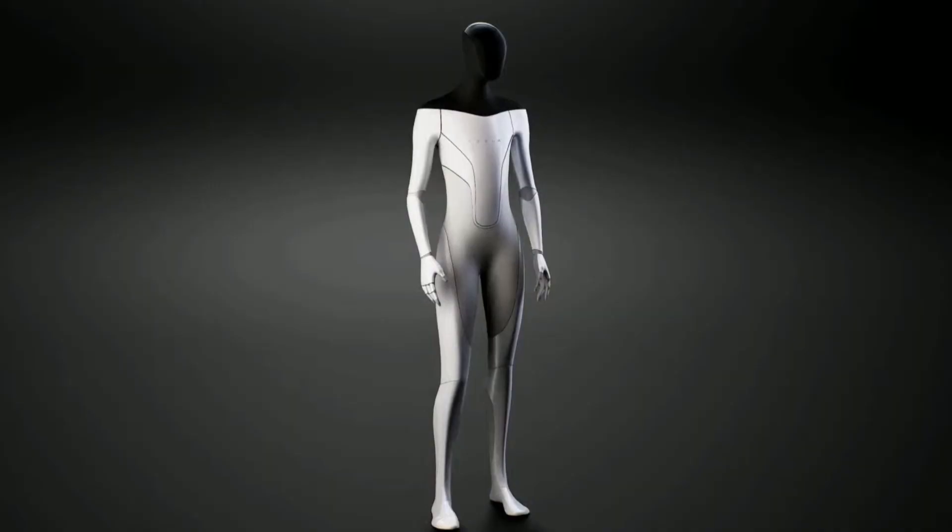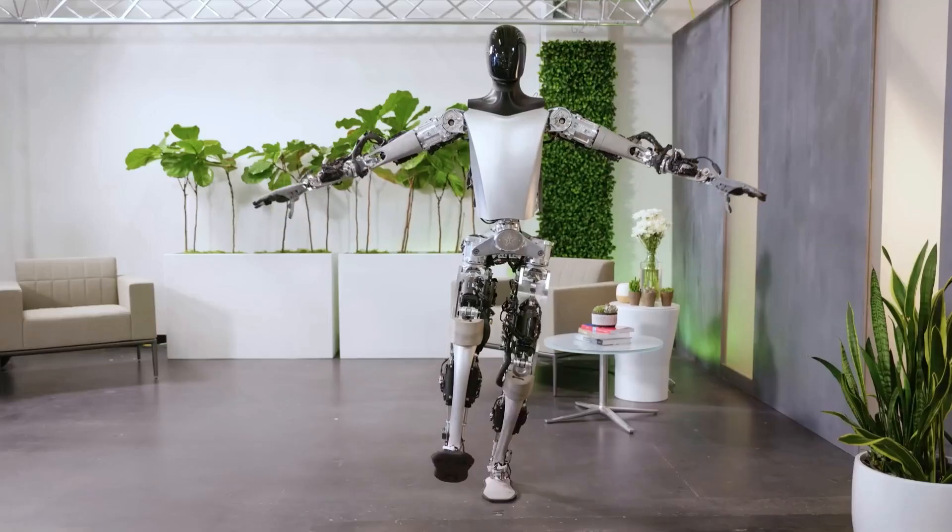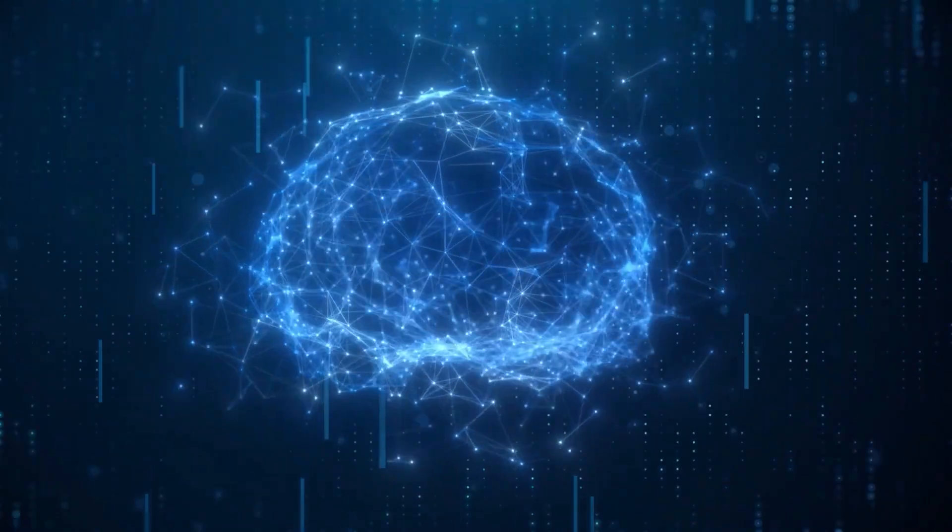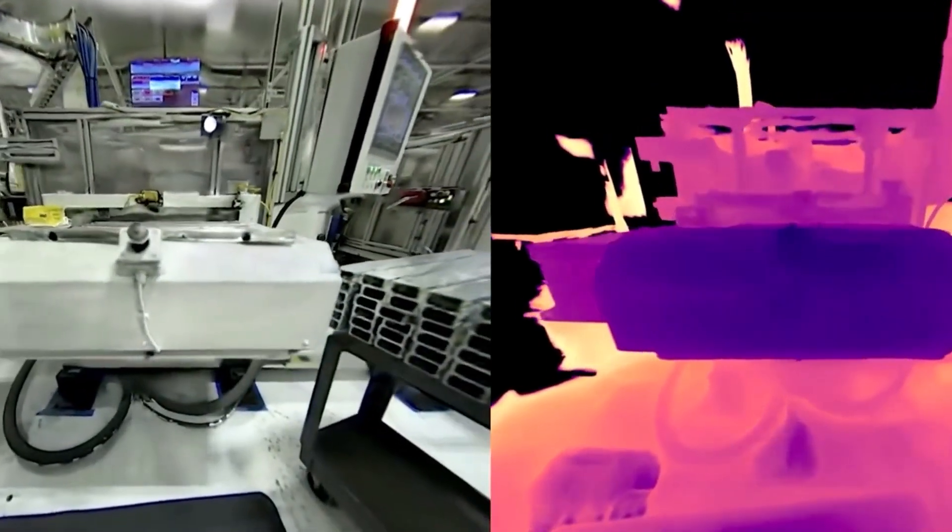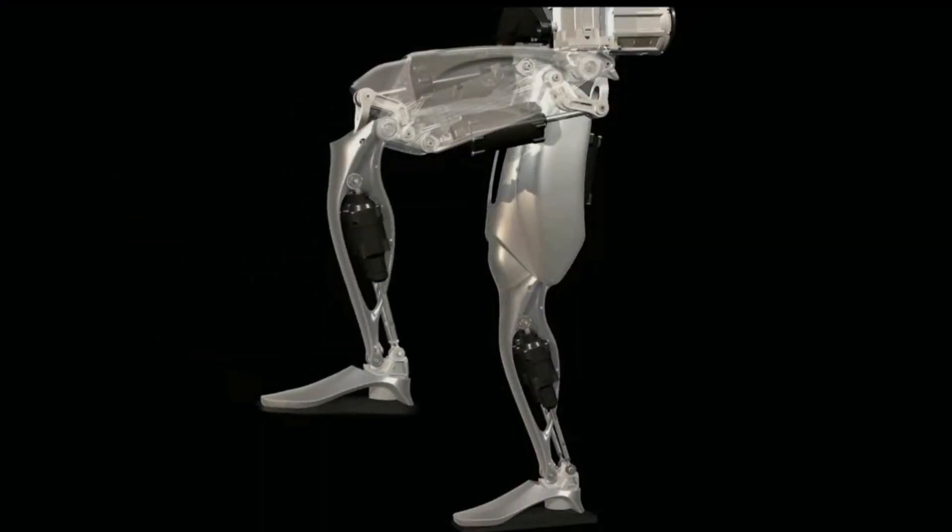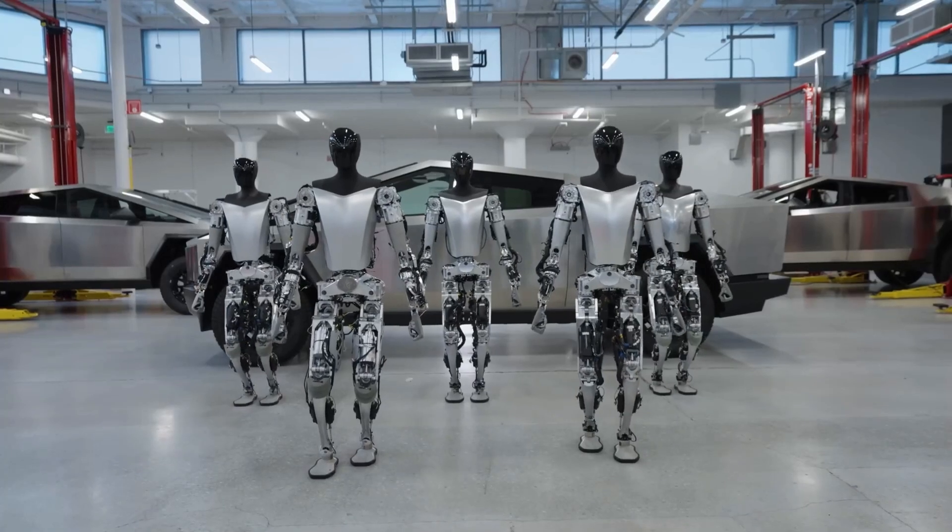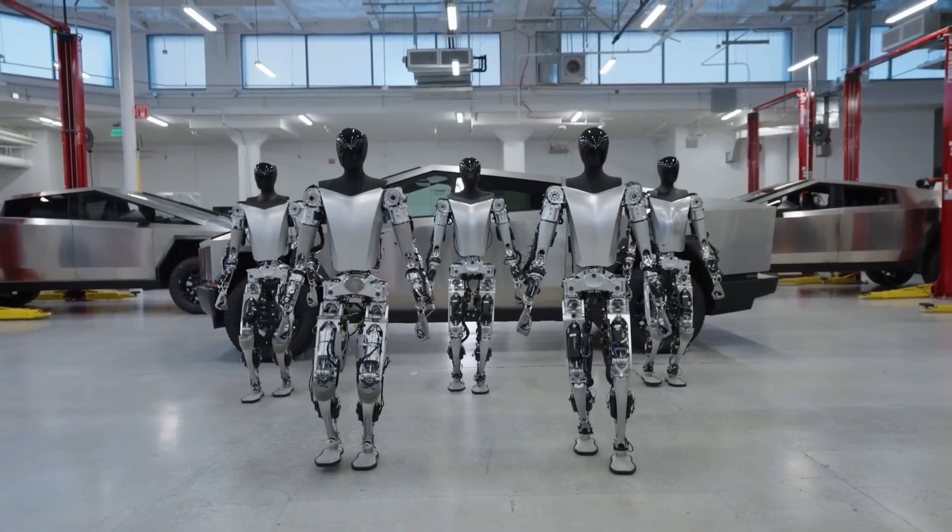Another skill that Optimus has learned using end-to-end neural nets is balancing on one foot and maintaining a yoga pose. The input to the neural net is a video feed from the cameras on Optimus' head and feet, as well as the joint position sensors on Optimus' limbs and torso. The output of the neural net is the control signals for Optimus' joints and actuators.